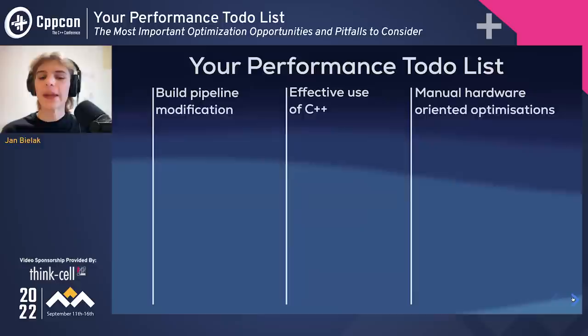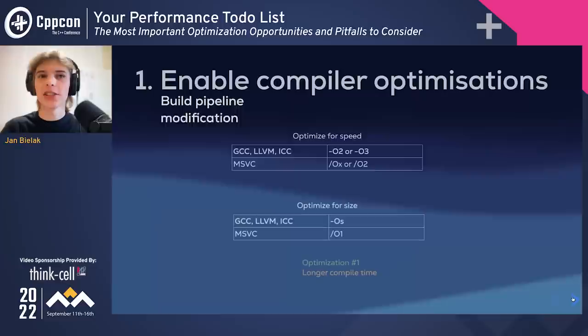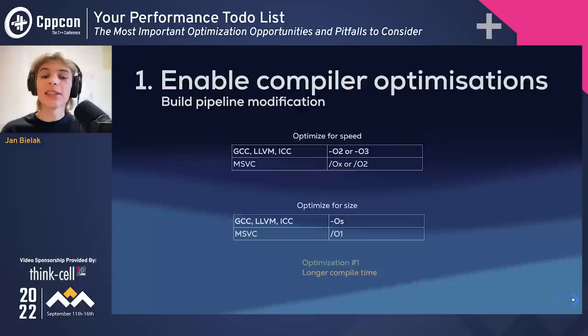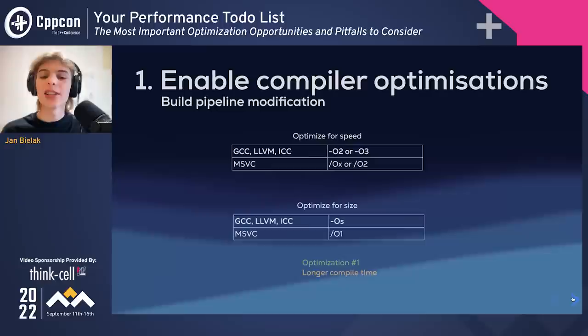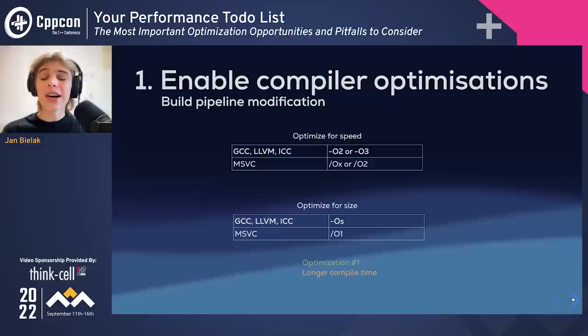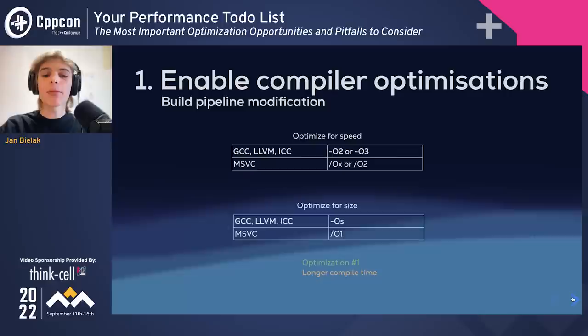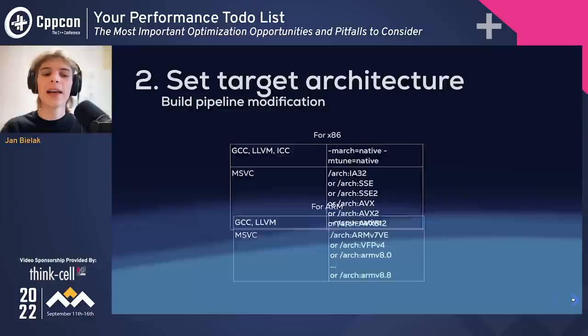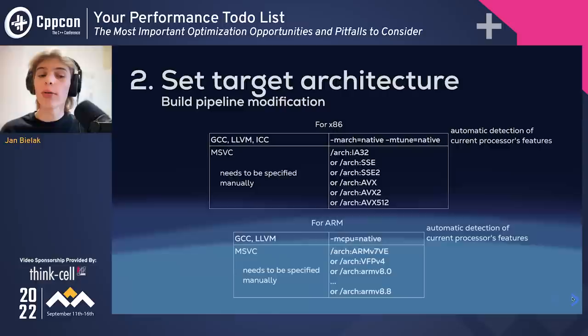Let's start with examples that don't require touching C++ code — build pipeline optimizations. The first thing to do is enable compiler optimizations. This can be done by adding relevant flags to the compiler driver invocation. An opportunity here is to try out and compare various flags such as O2 or O3. It may be worth spending some time researching the various flags available in your compiler. Some notable examples include setting the target architecture to enable the compiler to perform micro-optimizations addressed at specific micro-architectural details, and telling it which SIMD instructions it can use.